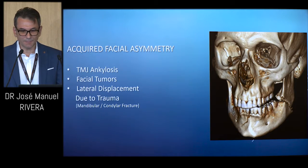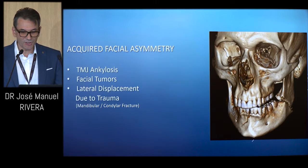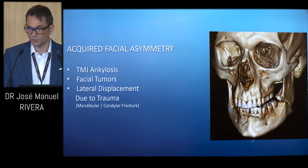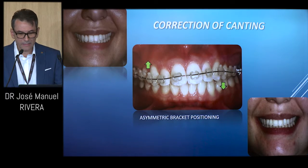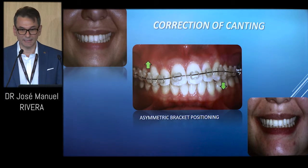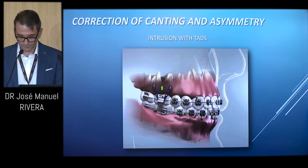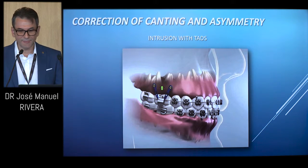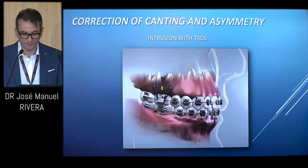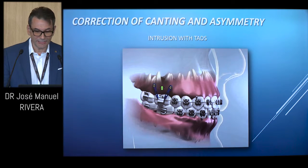Acquired facial asymmetry is best treated with surgical intervention, such as cases of TMJ ankylosis, facial tumors, or lateral displacement due to trauma. MLD is also associated with occlusal canting. Treatment options include asymmetric bracket positioning, and the use of temporary anchorage devices or TADs to perform differential intrusion and extrusion procedures. We can use either an elastic chain, coil spring, or elastic ligature thread together with a TAD for intrusion mechanics.